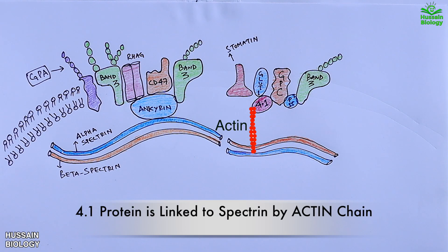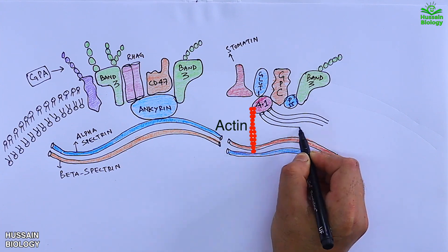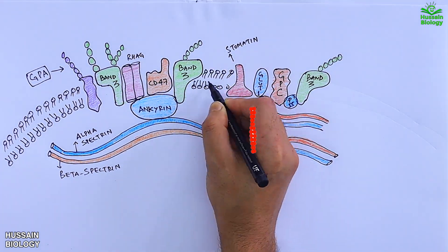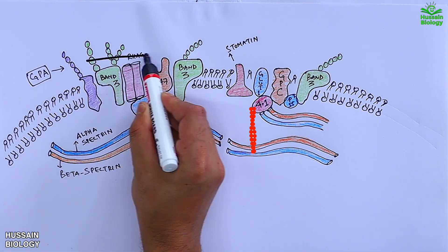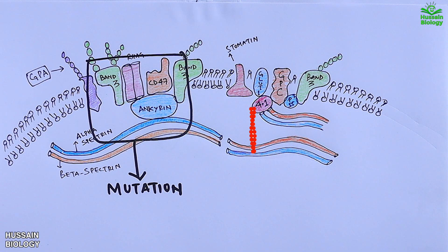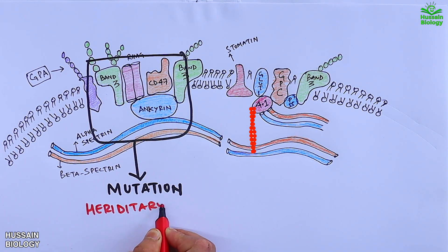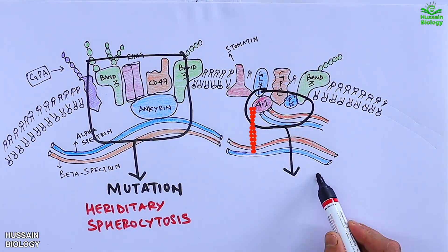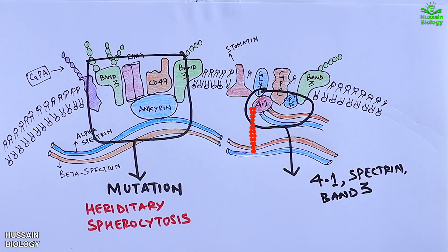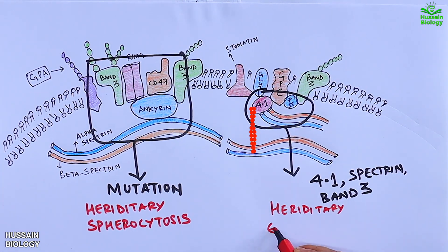These are the important proteins present on the RBC membrane; their respective functions will be discussed in detail in the upcoming video. Mutations in band 3 protein, ankyrin protein, spectrin protein, and protein 4.2 lead to hereditary spherocytosis, whereas mutations in protein 4.1, spectrin, and band 3 lead to hereditary elliptocytosis.